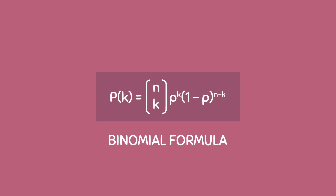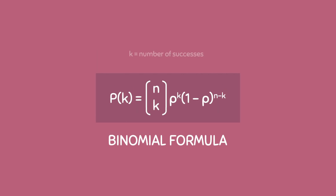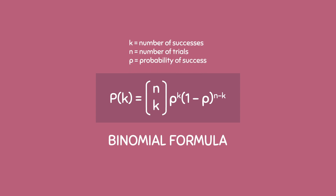From the previous video, we know that the binomial formula looks like this, where k is the number of successes, n is the number of trials, and little p is the probability of success.